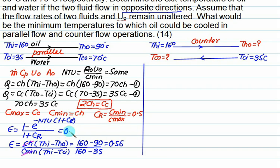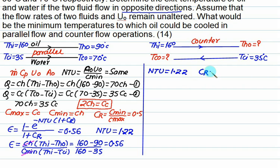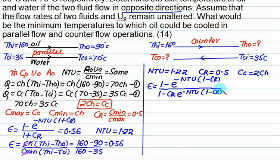Since NTU and CR are common to both heat exchangers, we use the counter flow effectiveness formula with NTU equals 1.22 and CR equals 0.5 to find effectiveness for counter flow equals 0.627.